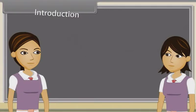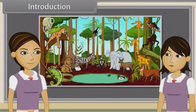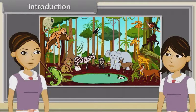Sharmila, in a few words define an animal. Yes, animals are a major group of mostly multicellular, eukaryotic organisms of Kingdom Animalia or Metazoa.